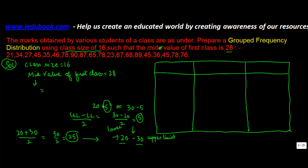So the mid value, or 25, can also be written as lower limit plus difference divided by 2, or upper limit minus difference divided by 2. So when you know that the mid value of the first class is 28, and the difference between these two is 16... Class size is what? This is basically upper limit minus lower limit.